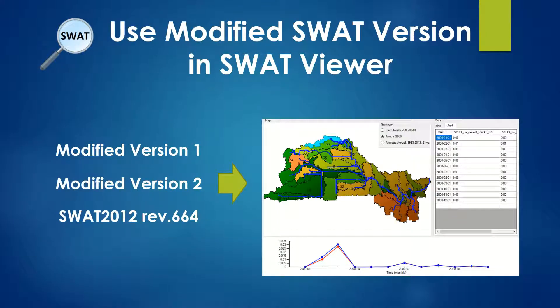What's up guys, Michael here. In the last video, we were talking about the comparison function in SWOT Viewer. With that function, you can compare the results from different SWOT versions — a standard SWOT version from the SWOT website, or a modified version from your own research. It's a powerful tool to help you test your own modified version. In that video, we didn't cover how you can add your modified version into the Viewer. We will cover that in this video.